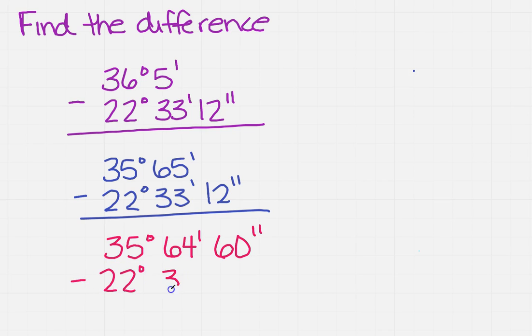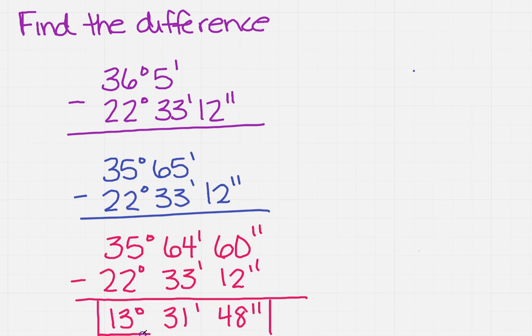Now it's a basic subtraction which we've done in the past on lots of problems. And so when I subtract I get 13 degrees, 31 minutes, and 48 seconds. So that very last line, that's going to be your answer.